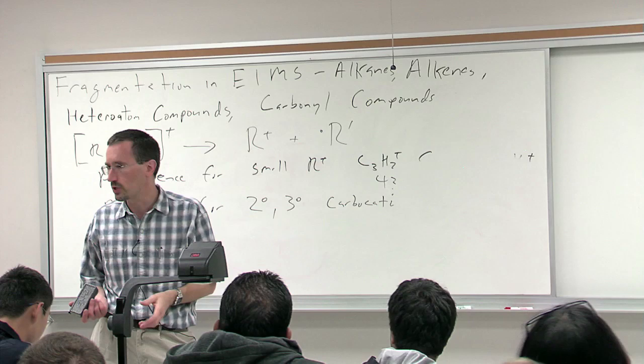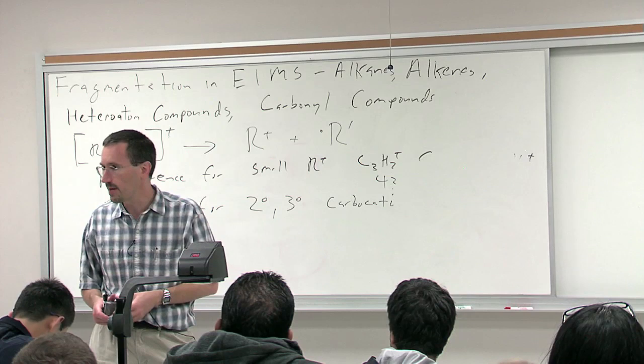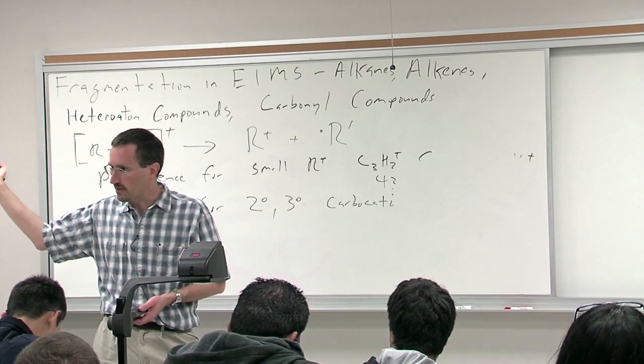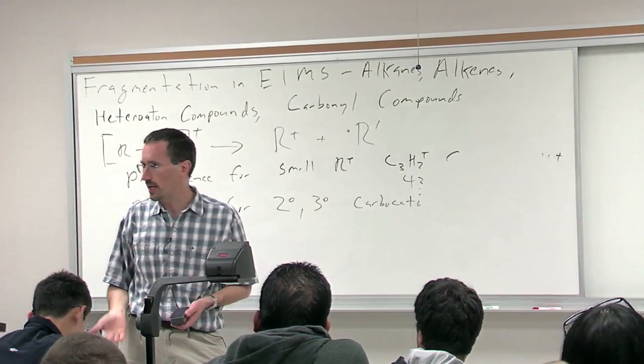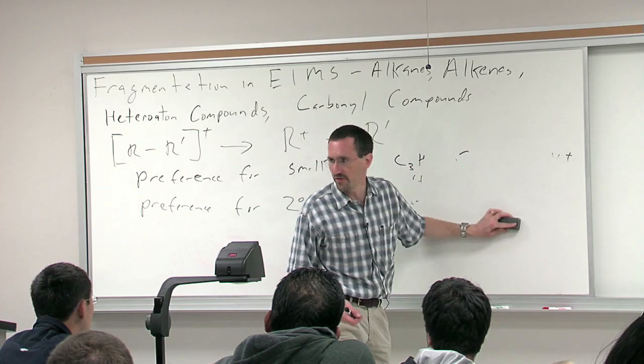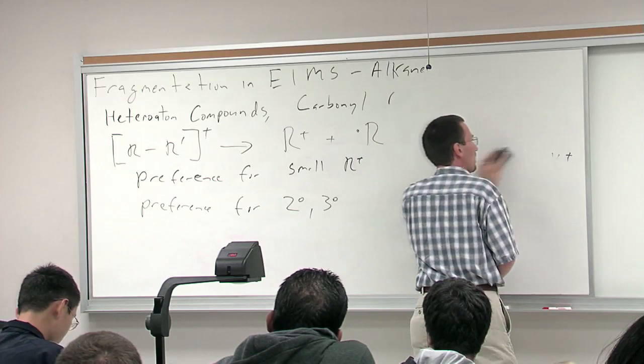So in this spectrum we were seeing peaks at 43, peaks at 57, et cetera. So if you know, oh my molecule has no nitrogen, and then you see only odd peaks, you say, oh wait a second, these all have to be fragments.